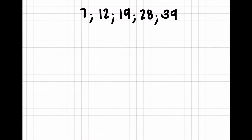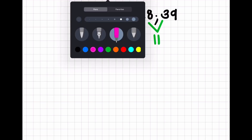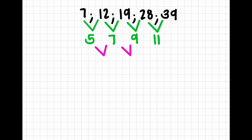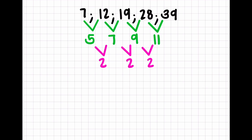Last example: we have the sequence 7, 12, 19, 28, 39. First difference: 12 minus 7 is 5; 19 minus 12 is 7; 28 minus 19 is 9; 39 minus 28 is 11. That's not a constant first difference. Second difference: 7 minus 5 is 2; 9 minus 7 is 2; 11 minus 9 is also 2. So we have a constant second difference — this is a quadratic.